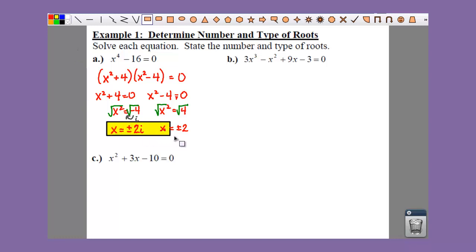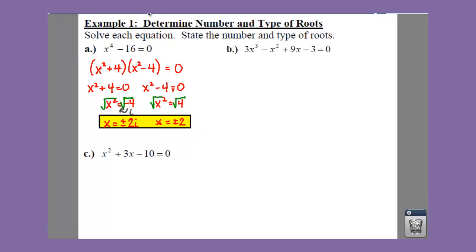So here are your solutions. You have a total of four. And since it says you have to state the number and type of root, we have two real roots, that would be your plus or minus two, and you have two complex roots. So you have to solve it and then say what kind of roots you have.